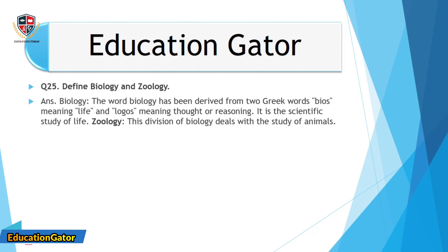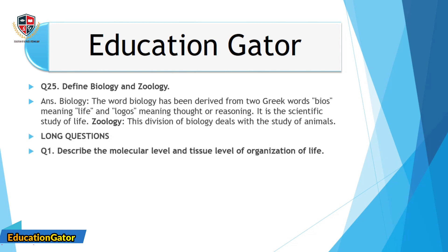Question number 25: Define biology and zoology. Ans. Biology: the word biology has been derived from two Greek words — bios, meaning life, and logos, meaning thought or reasoning. It is the scientific study of life. Zoology: this division of biology deals with the study of animals.